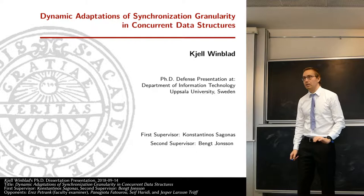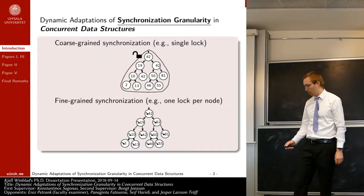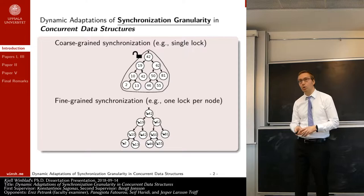I will start to explain what the middle part of this title means. The synchronization granularity of a concurrent data structure describes how granularly you do synchronization in that data structure. In the top here, we have an example of a data structure that uses coarse-grained synchronization.